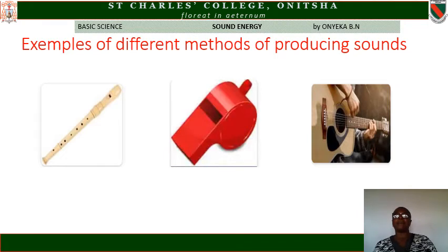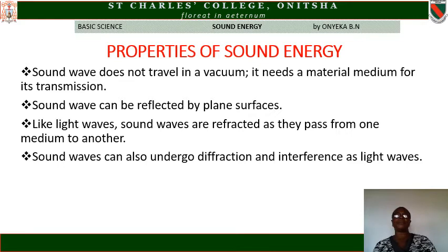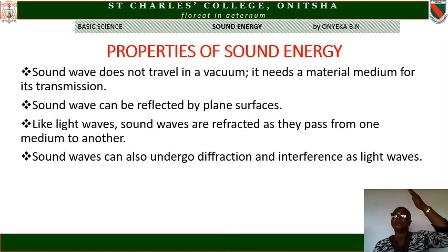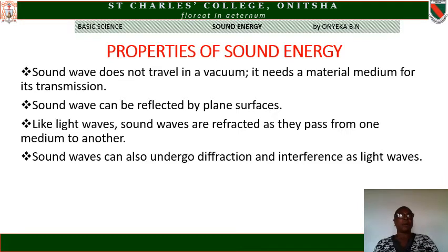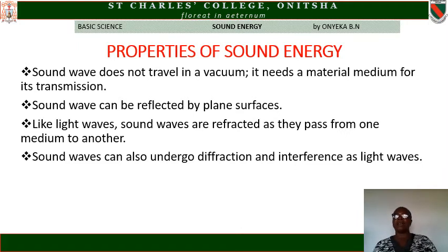Properties of sound energy: sound waves do not travel in a vacuum — they need a material medium for transmission. That is why travelers going into space cannot produce any sound there, because it is a vacuum with no air. Second, sound waves can be reflected by plane surfaces. Third, like light waves, sound waves are refracted as they pass from one medium to another. Fourth, sound waves can also undergo diffraction and interference, as light waves do.